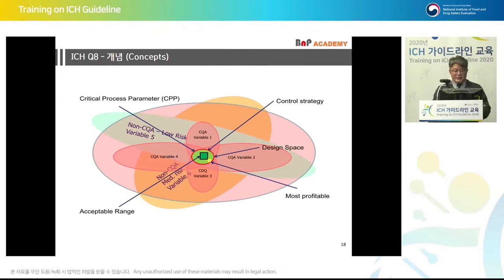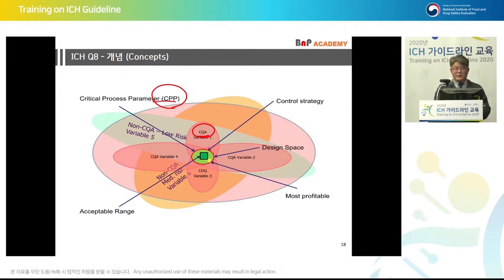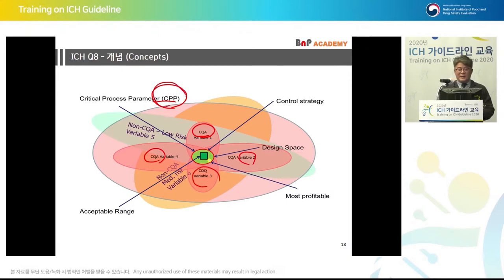The concept of ICH Q8: process parameters impact on CQA. Depending on the level of influence and impact — meaning changes in product quality — parameters such as temperature, pressure, and materials are assessed. There could be multiple CQAs such as impurities and strength. What kind of impact do these parameters have on CQA? That is how we select CPP.